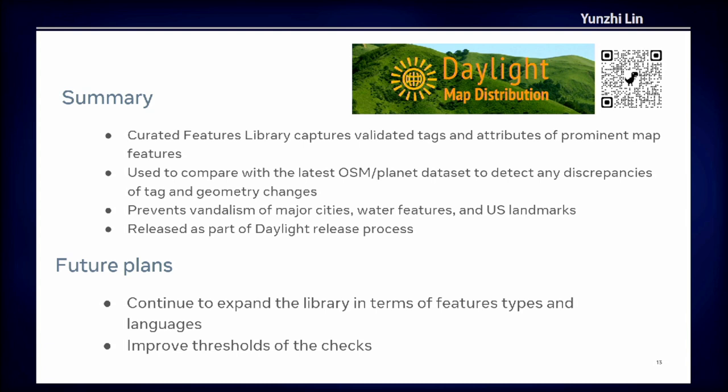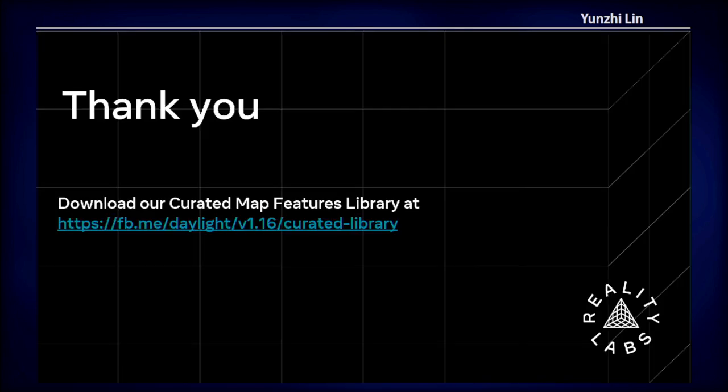If you're interested in Daylight, you can scan the QR code here to get more information. In the future, we plan to continue expanding the library in terms of feature types and languages, and we also want to improve the thresholds of each validation track. If you want to download this curated map feature library, here's a URL. Thank you.